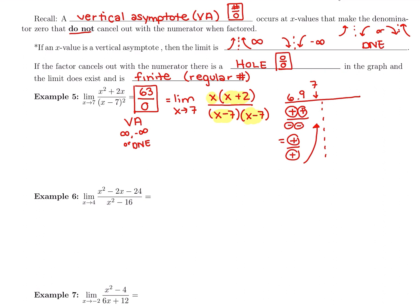Now plugging in 7.1 on the right: the first factor 7.1 is positive, and 7.1 plus 2 is positive. In the denominator, 7.1 minus 7 is positive, and again positive — positive times positive is positive. So positive divided by positive also goes up. Both the left-hand and right-hand limits go to positive infinity, so the two-sided limit is positive infinity.